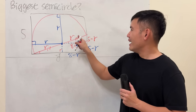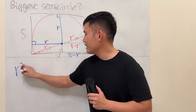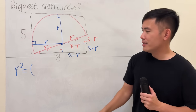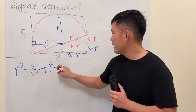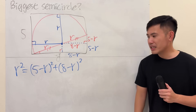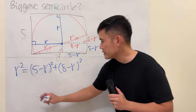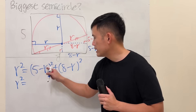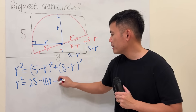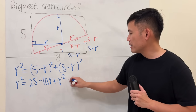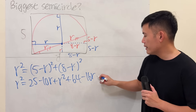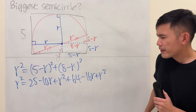Have a look. r squared has to equal (5 minus r) squared plus (8 minus r) squared. Now the rest is just algebra. Let's expand: r squared equals 25 minus 10r plus r squared, plus 64 minus 16r plus r squared.